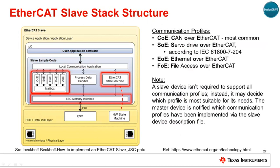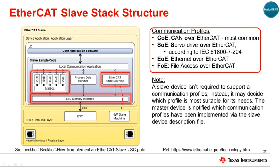This diagram shows the structure of the software stack that performs the functions just listed. The stack is organized into blocks to manage the interface between the ESC hardware and the MCU memory, run the EtherCAT state machine, handle process data, and manage the mailbox and communications protocols. Using the communication profiles, EtherCAT is able to provide an interface to other standards. The profiles include COE, or CAN over EtherCAT, which is the one most commonly used.